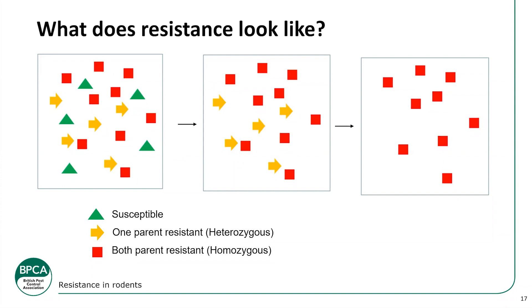If you notice this resistance and switch to a multi-feed rodenticide, you'll then eliminate the ones carrying, say, the L128Q Scotland strain — they're susceptible to those multi-feed products — leaving only the most resistant strain, such as the Hampshire strain, which shows resistance to second-generation multi-feeds. You'd then need to use single feeds to control those remaining resistant ones. If you only control around 70% of the population, the remaining super-resistant strain breeds and the next generation may be 75% resistant — so leaving even a few rodents can significantly increase resistance in that area.